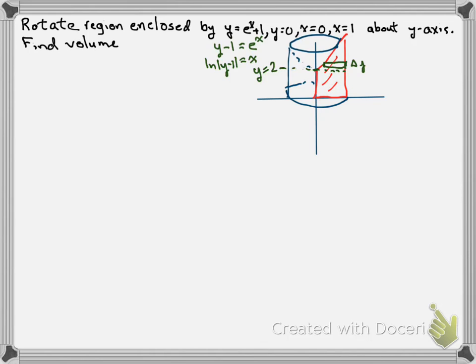Let's do our two integrals. The first one is nice because it's basically just a cylinder — pi times our radius squared, and the radius doesn't change for the bottom part; it's always going to be 1 unit. So the first integral is the integral from y equals 0 to y equals 2 of pi times 1 squared dy.